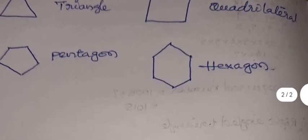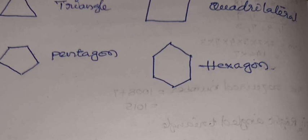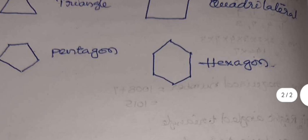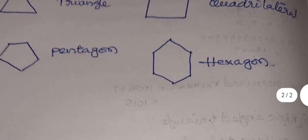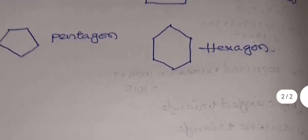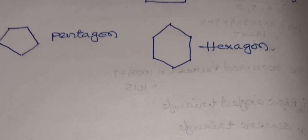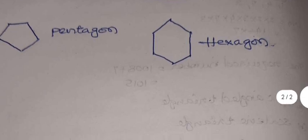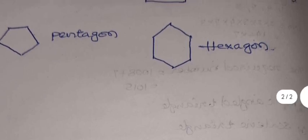The question B is: write any four polygons and write their names. So here the first one is taken, it is a triangle. The second one contains four sides, so it's a quadrilateral. And the third one contains five sides, so it is called a pentagon. And the last one contains six sides, it is called a hexagon.